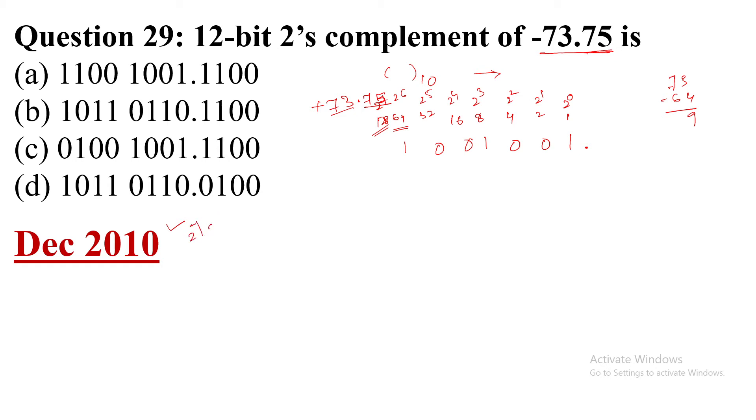Now 0.75, how we will represent? This is 2's power minus 1 equal to 1 by 2, that is 0.5. 2's power minus 2 equal to 1 by 4 equal to 0.25. How? 4 divided by 1, so put a point. Then 0 will come, 4 into 2 is 8, 10 minus 8 is 2, 0. 4 into 5 is 20, 0.25.